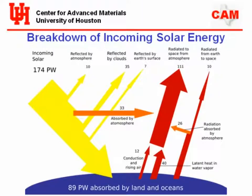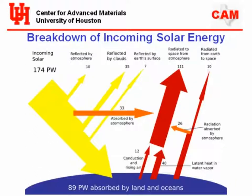Only about half of that solar energy is absorbed by the land and ocean — there's reflection, atmosphere absorption, radiation, et cetera. Of that nominally 100,000 terawatts, we only need something like another 10 or 15. If we could capture that energy in some way, we'd solve all of our energy problems.